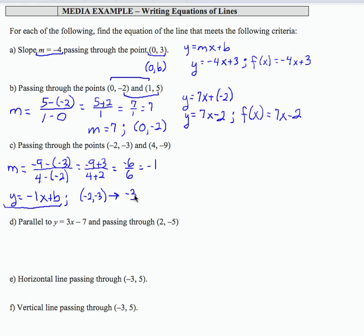So I'm going to replace y with negative 3. There's my slope. I'm going to replace x with negative 2 plus b. So I get negative 3 equals 2 plus b. If I subtract 2 from both sides, I get negative 5 equals b. So here's my b value. I know my slope is negative 1.